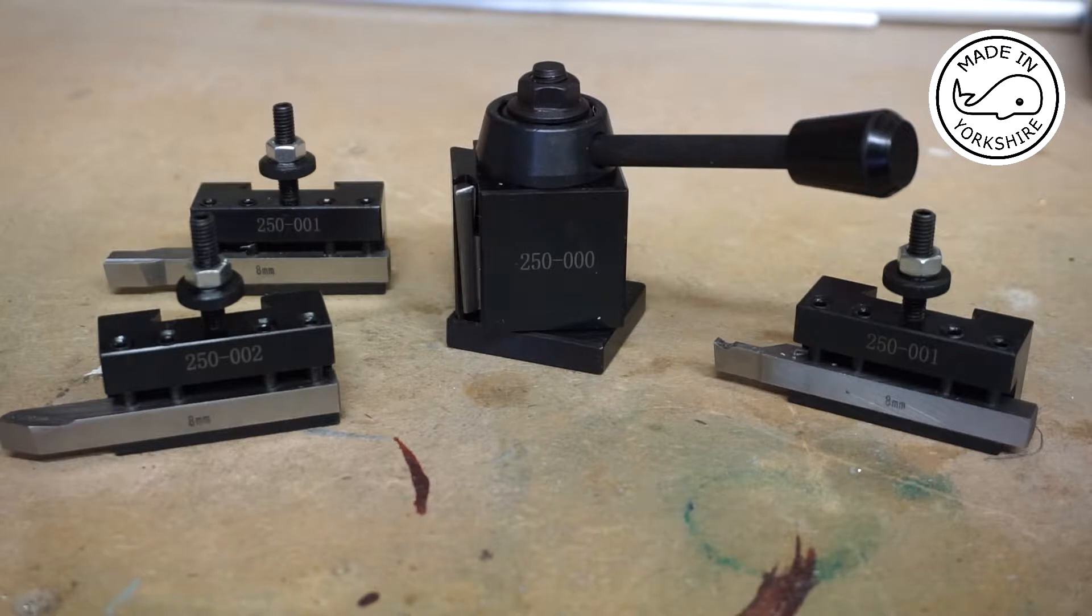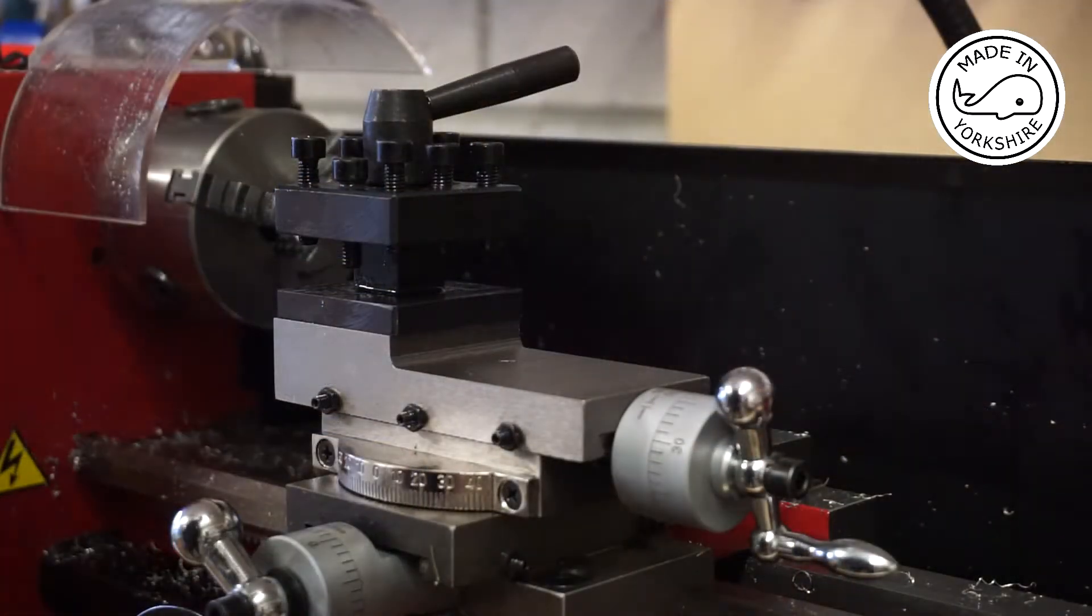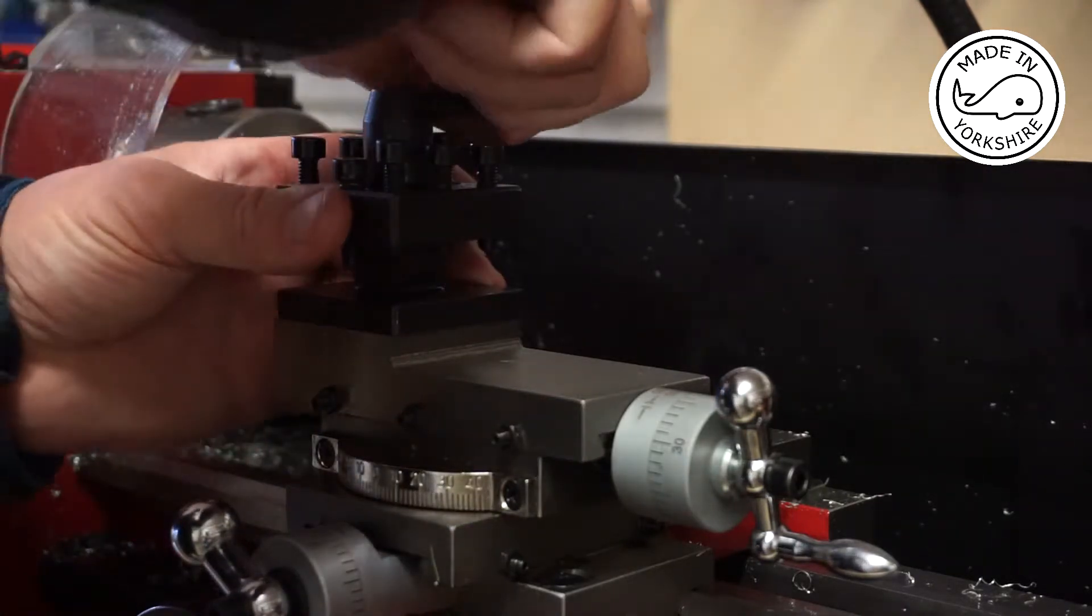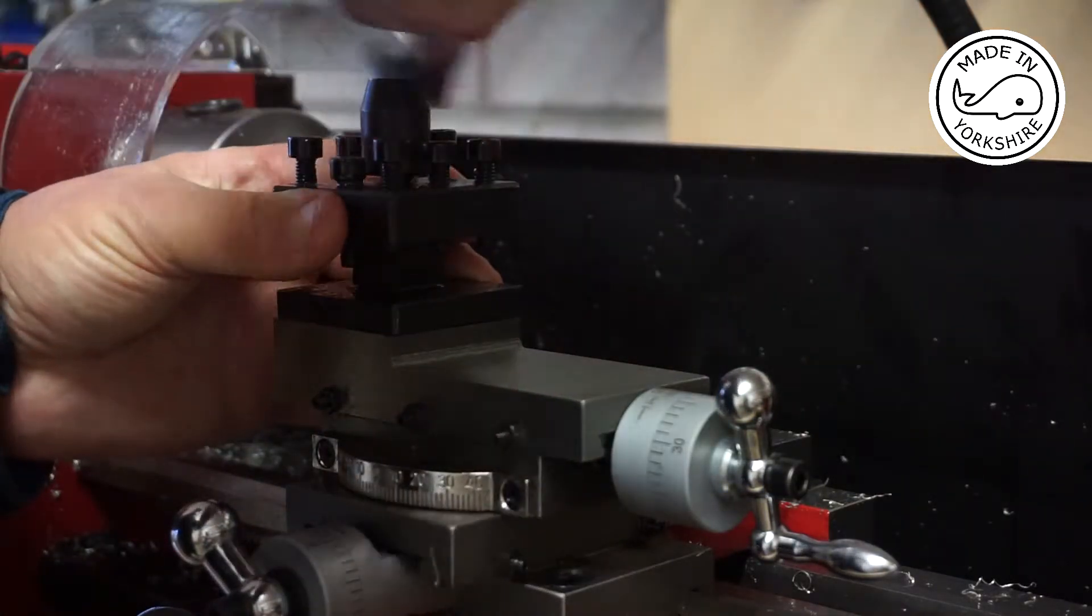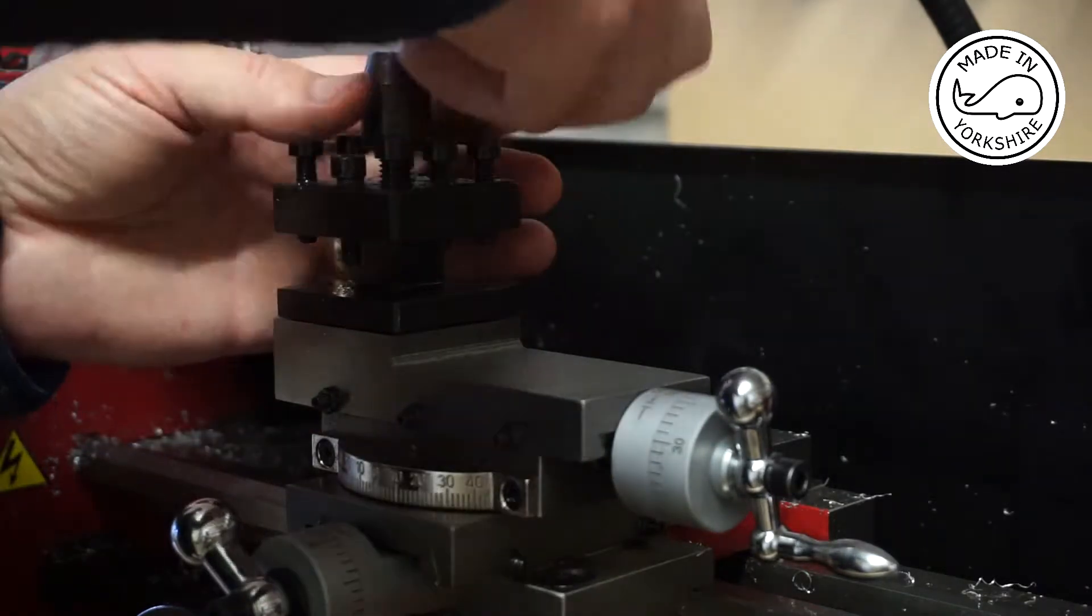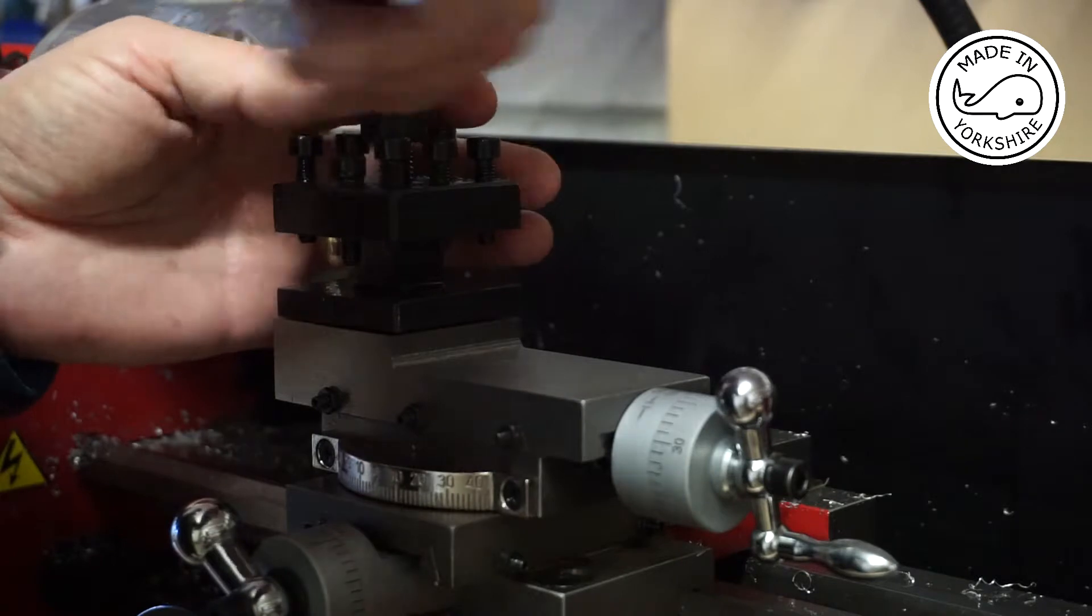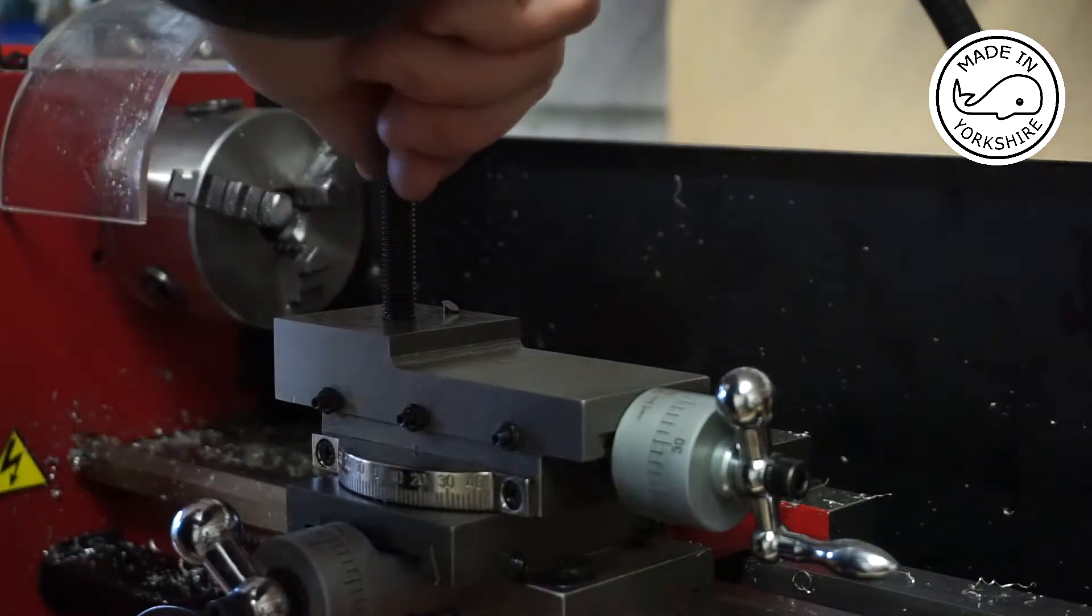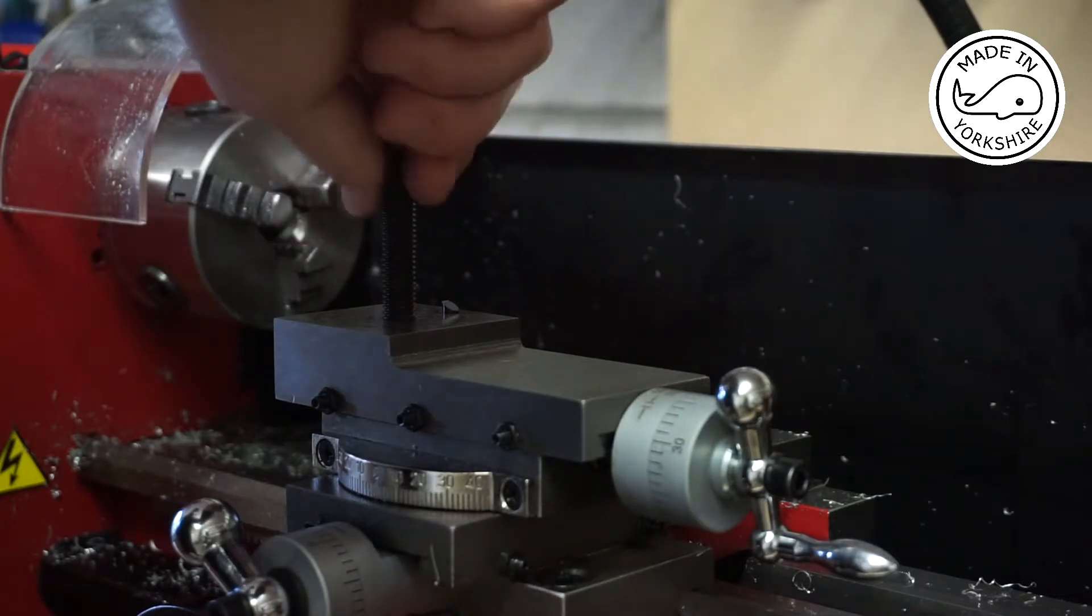So anyway I'll show you how to install it. OK so to install the quick change tool post obviously we need to remove the standard tool post and that's really easy to do. Just unscrew that, lift that off and unscrew the bolt.